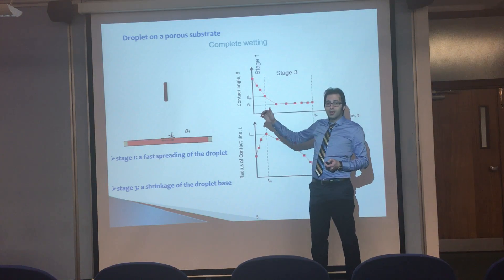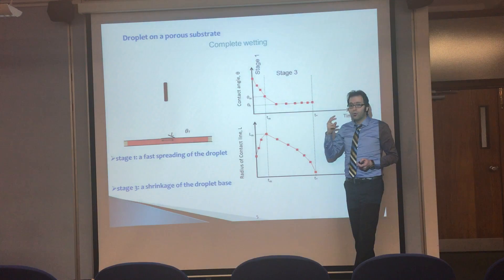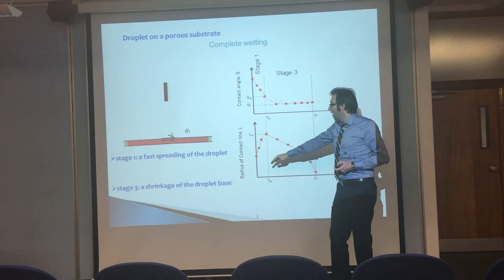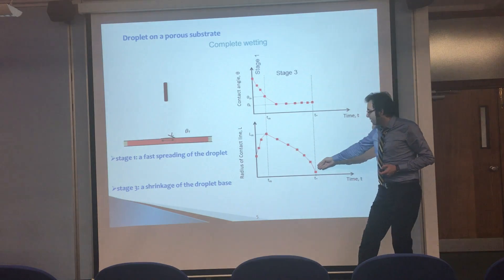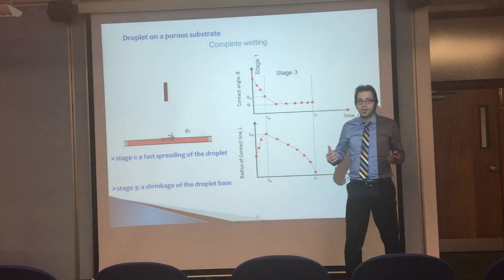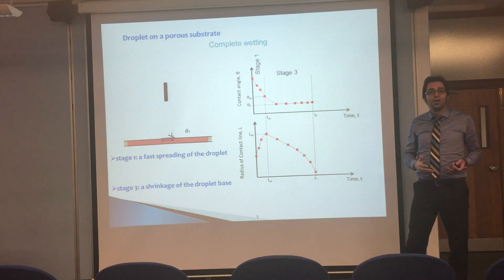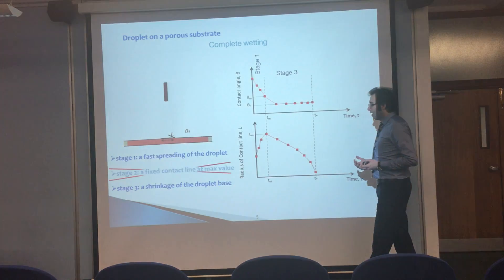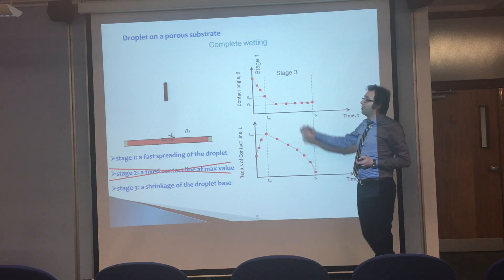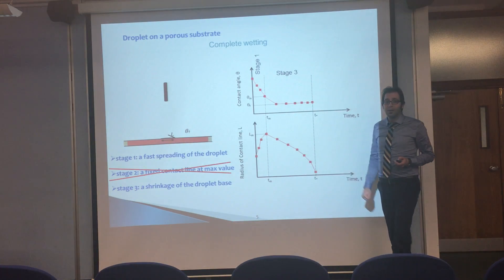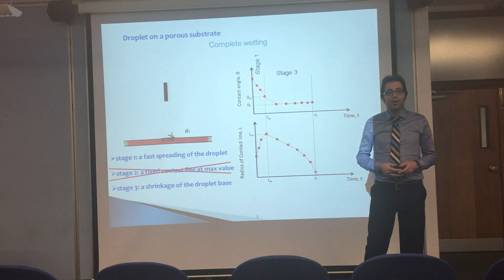Overall, in complete wetting behavior we have only two stages: fast spreading of the droplet followed by shrinkage of the droplet base radius. The fixed contact line stage that we see in partial wetting is absent in the case of complete wetting behavior. Any questions or comments?